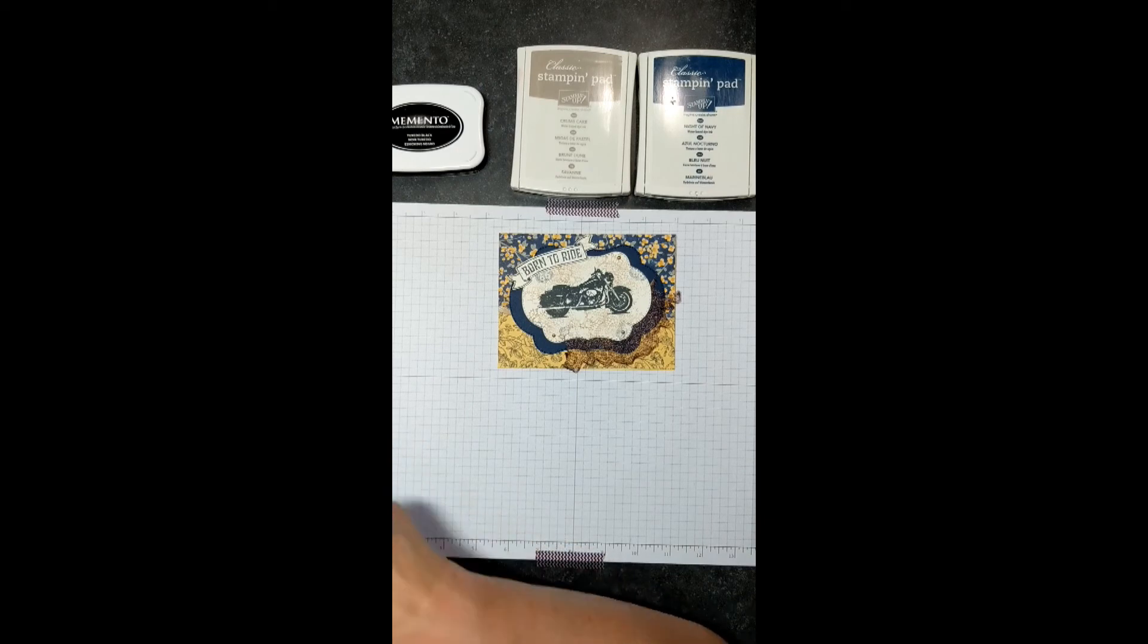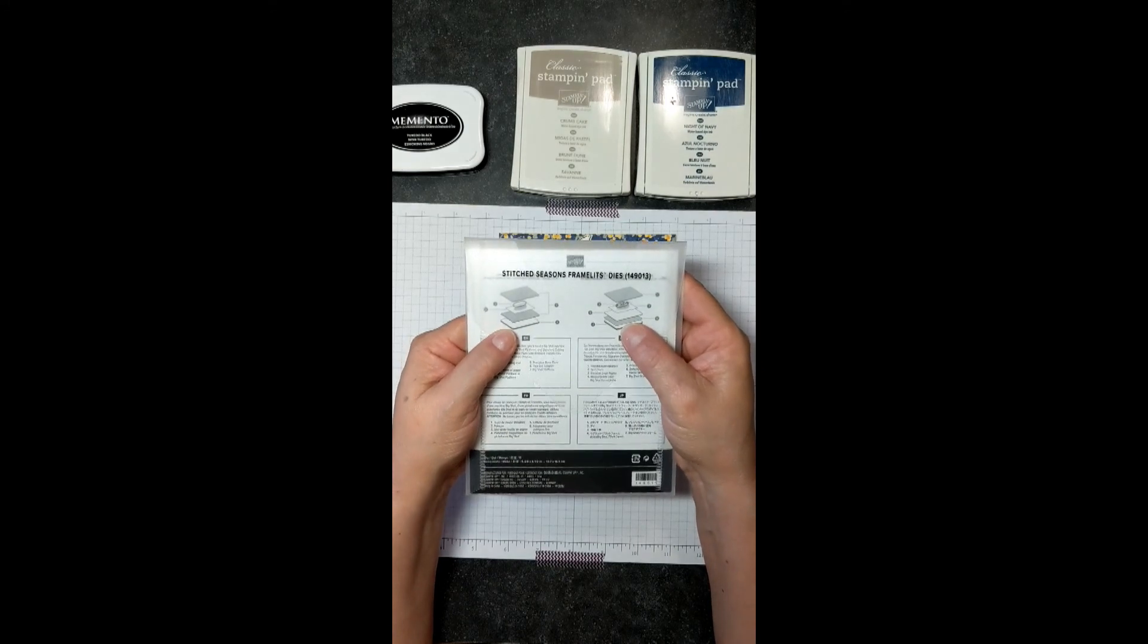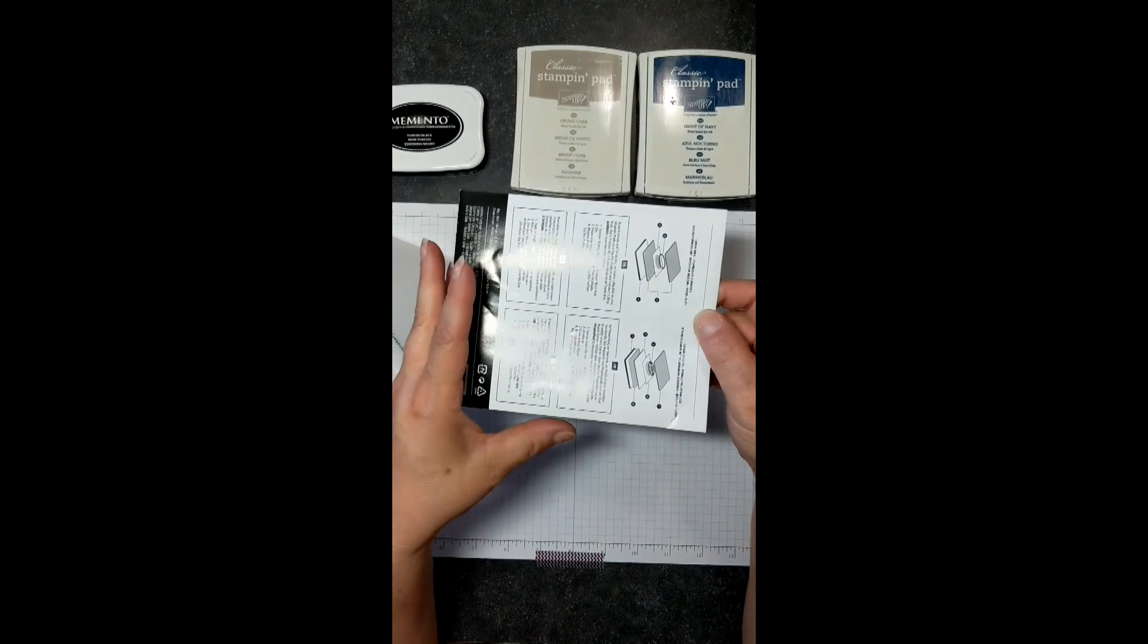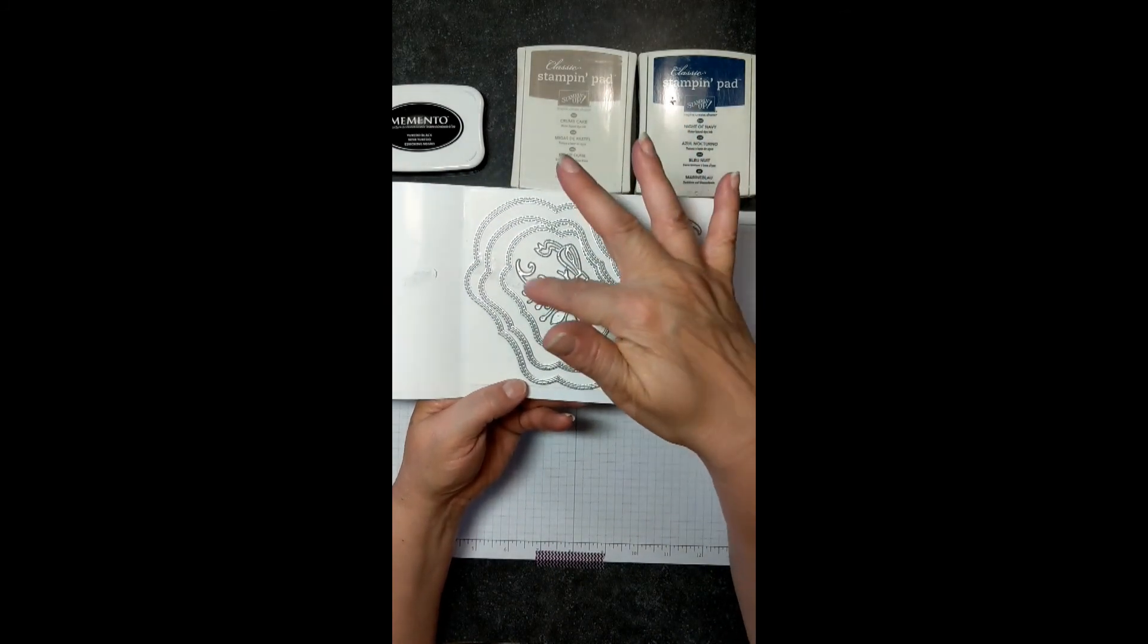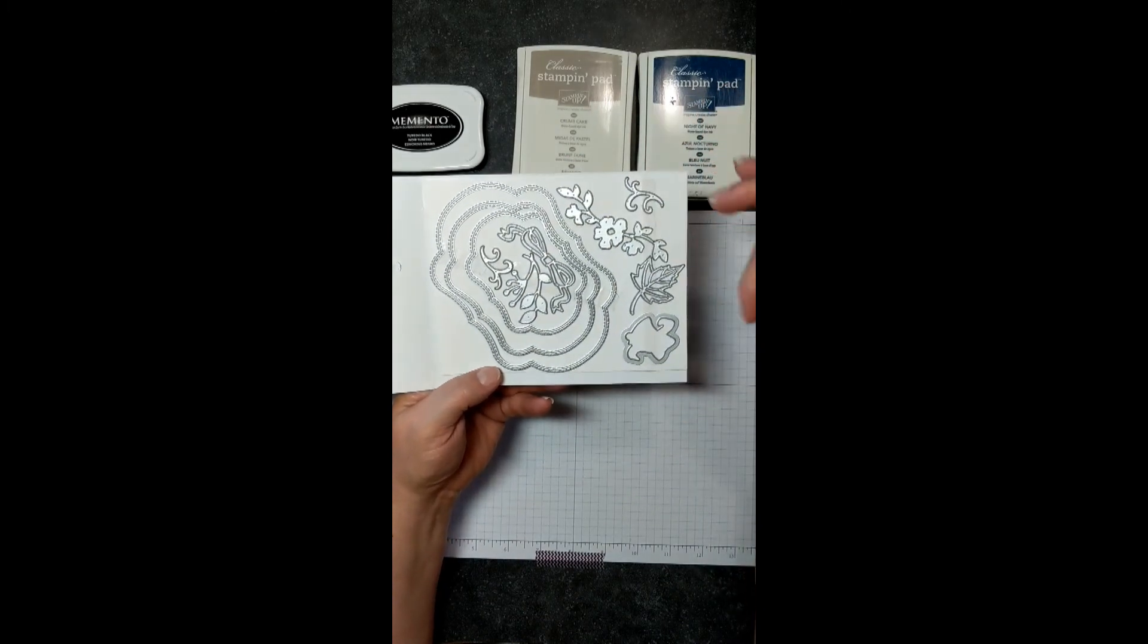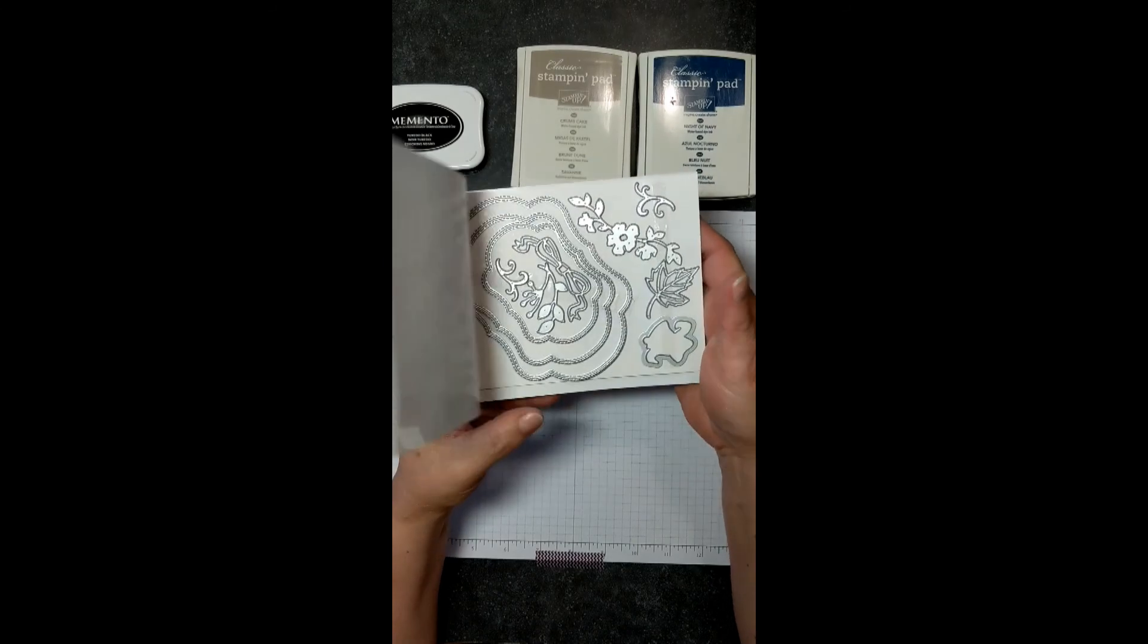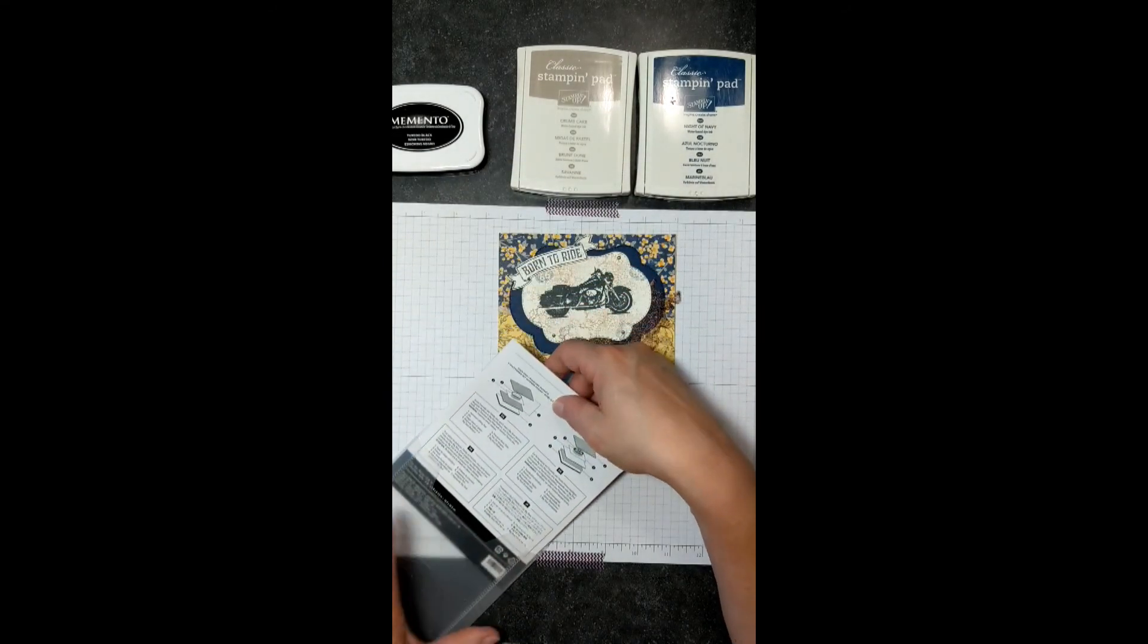For the sake of time, I have pre-cut. In August, we will be able to order this amazing framelit set called Stitched Seasons Framelits. These are awesome framelits. Look at how much fun these are, and we've got ribbons, and frames, and leaves, and swirlies, and a garland, and some bells, and just all kinds of great stuff. You're going to want to have this set, and it will only be available in August.